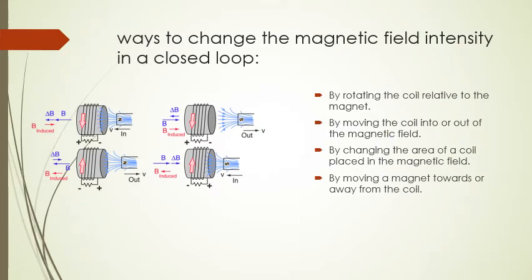There are certain ways to change the magnetic field intensity: by rotating the coil relative to the magnet, by moving the coil into or out of the magnetic field, by changing the area of the coil, or by moving a magnet towards or away from the coil. Several experiments can be performed using these methods.